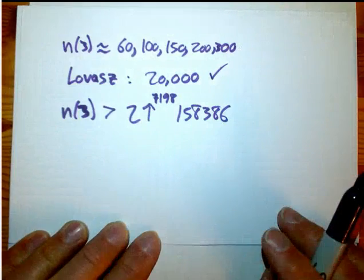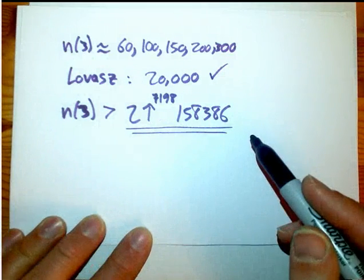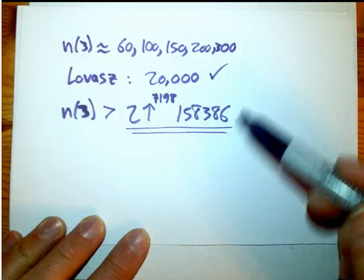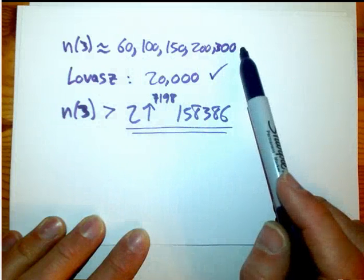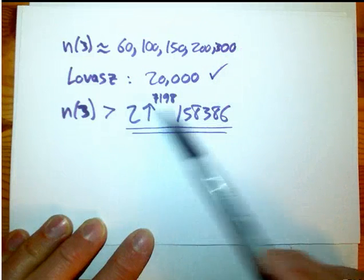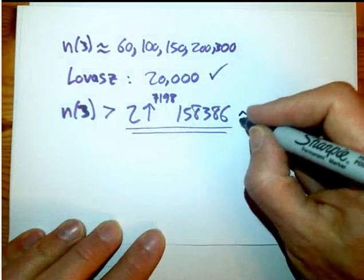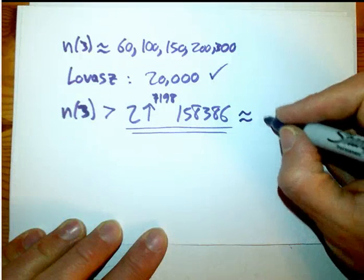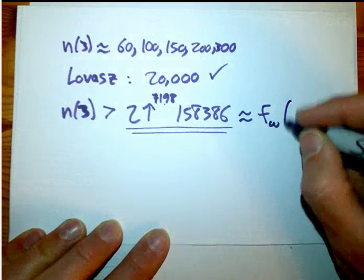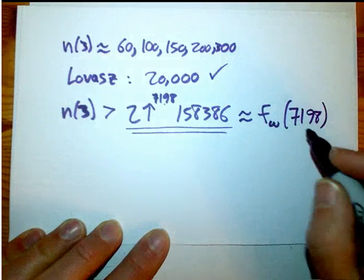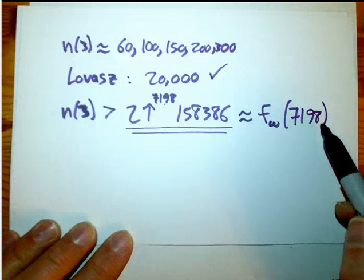This is surprisingly more of a Graham's number Ramsey problem than a standard Ramsey problem. Standard Ramsey problems have bounds of a more modest nature; Graham's number is more in this range. Let's locate this in our fast-growing hierarchy. Because we're putting a pretty decent number in here, that's about F_ω of 7,198 roughly, since that goes into the F_ω slot. So it's at the F_ω level with a pretty decent argument here, but not a lot beyond the F_ω level.